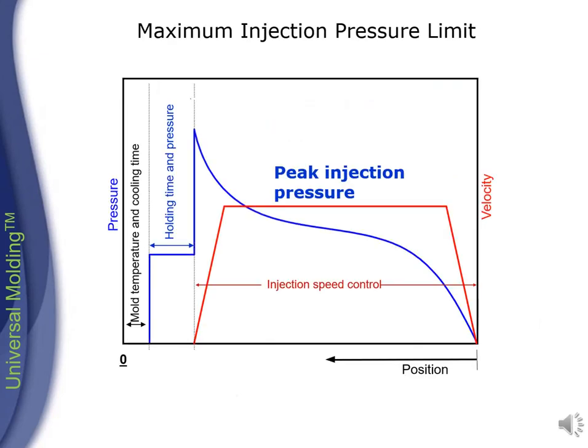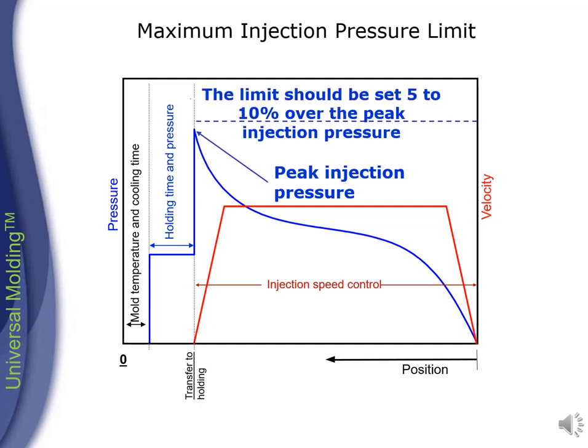Maximum injection pressure limit. The maximum pressure, or peak injection pressure, should happen during the transfer to pack. The limit should be set from 5 to 10 percent over the peak injection pressure.